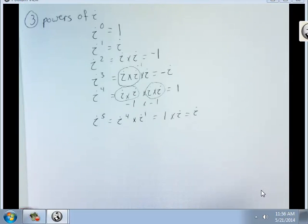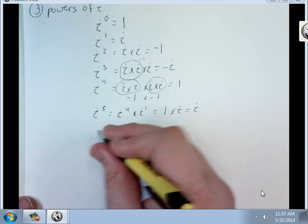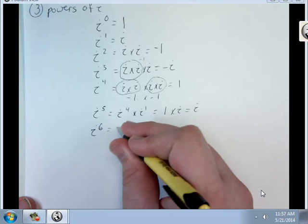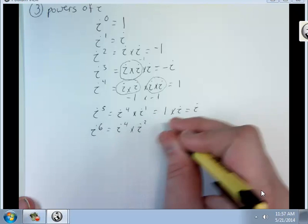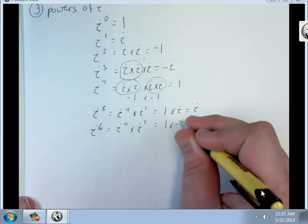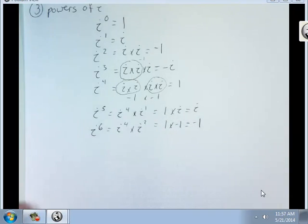i to the sixth is i to the fourth times i squared, 1 times negative 1, which is negative 1. And we're going to keep cycling through those four values. So much so that we have a rule.